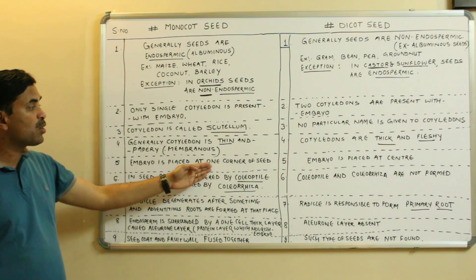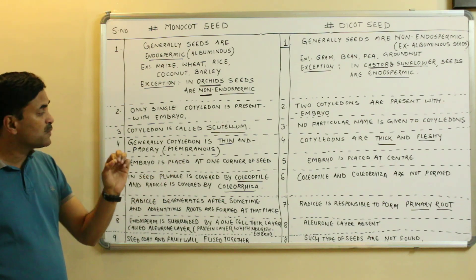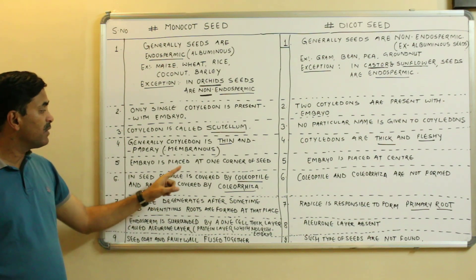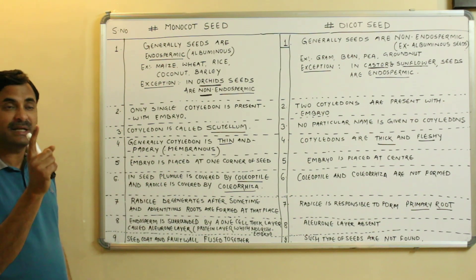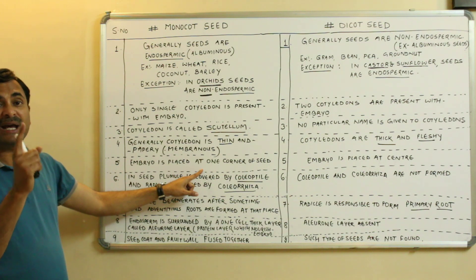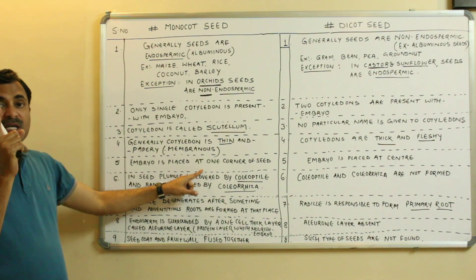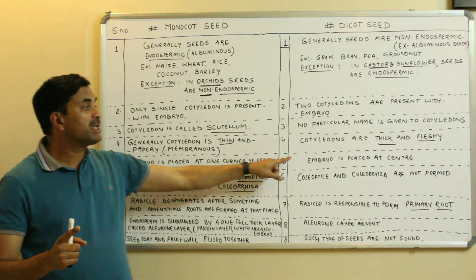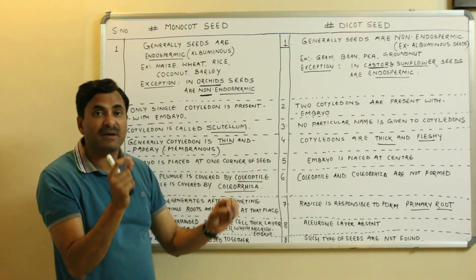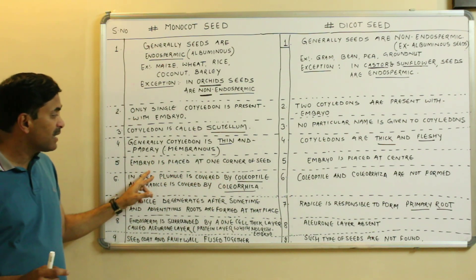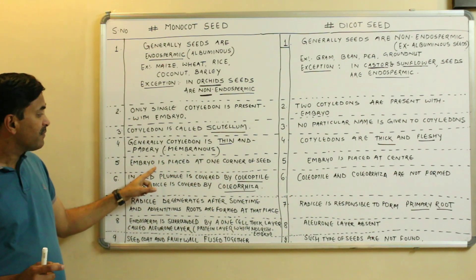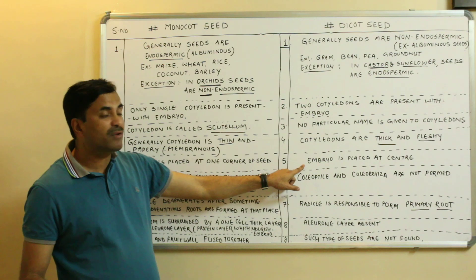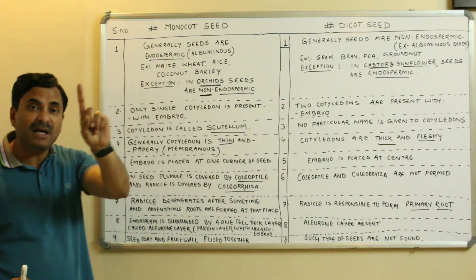Fifth point: in monocot seeds the embryo is placed at one corner of the seed — if you see a diagram in any book or in your NCERT, the embryo is not at the center but at one corner. In dicot seeds, the embryo is placed exactly at the center of the seed.